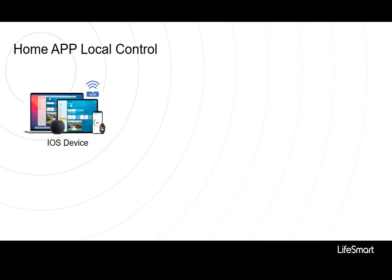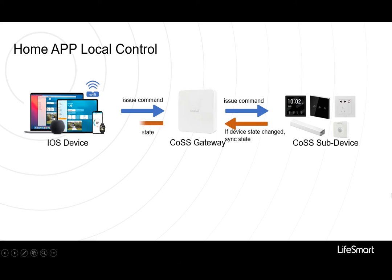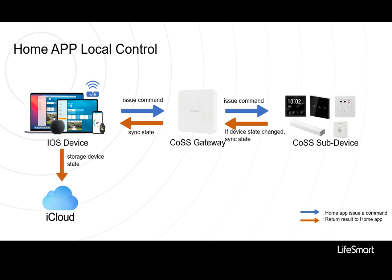When we use an iOS device with Apple ID logged in at home and open the Home app to add a LifeSmart gateway, the gateway will be bound to this Apple ID. The HomeKit command is issued by the iOS device to the sub-device via the gateway. The sub-device will update the status as required and return information to the iOS device. iCloud is responsible for storing and synchronizing information.